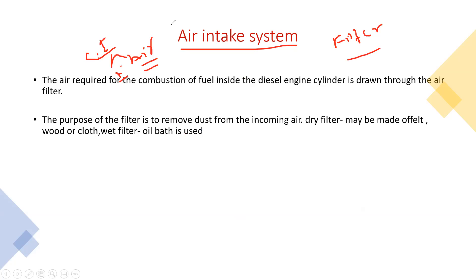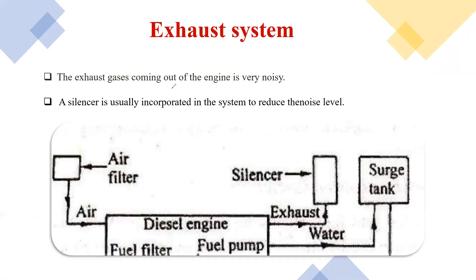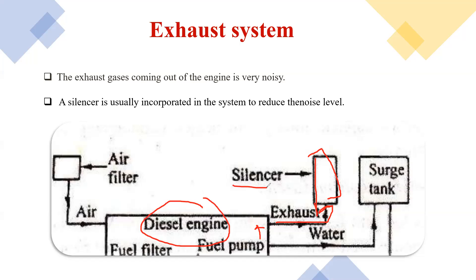The next is the exhaust system. In the exhaust system, we consider the silencer. After the injection of air and fuel, the diesel engine starts, and we pass this exhaust air through the silencer. The function of the silencer is to remove the noise which is present in the diesel engine. That is why, when you see the construction of a diesel generator, the silencer is present outside the diesel engine — it is established on the outside to remove noise.